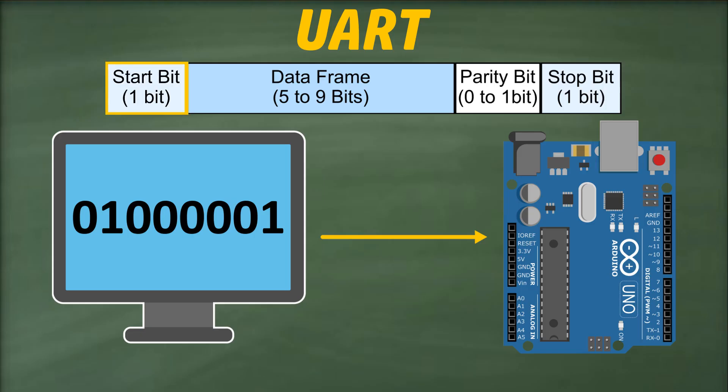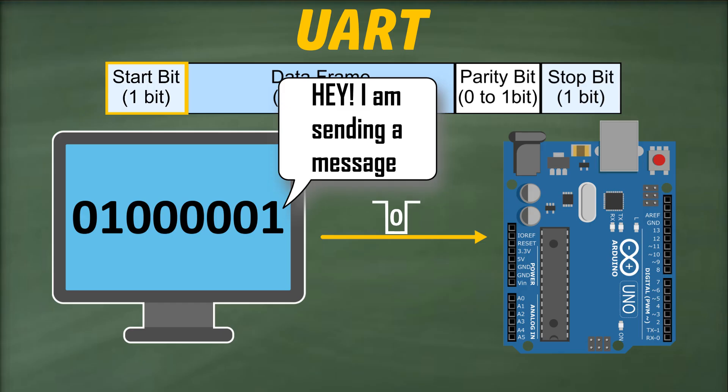We will start with the start bit. Normally, when the transmitter has no data to transmit, it outputs a high signal. But when it's ready to send data, it outputs a low signal pulse, which is our start bit, signaling the beginning of data transmission. It's like alerting the receiver, saying, get ready, I am sending some data.